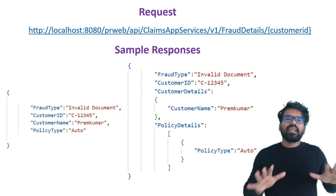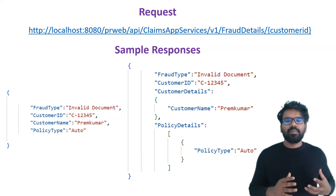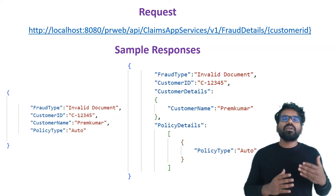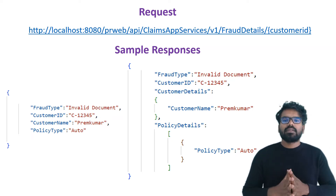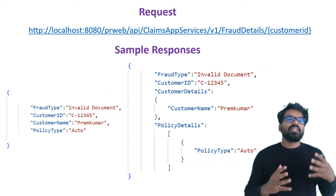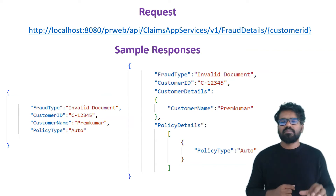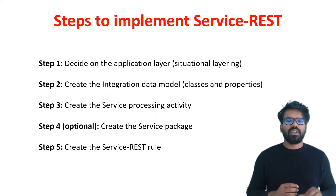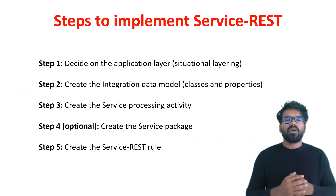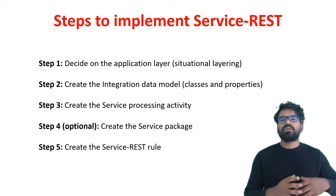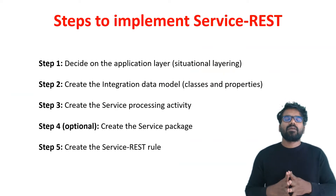I wanted to show you both ways. I want to implement both scenarios to let you know how to create a page, how to create a page list, and how to create all the integration classes for such a JSON structure. So at the end, we get a customer ID as input and give back the fraud details. There are five simple steps to create this service REST.